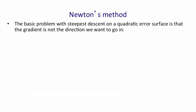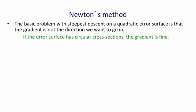So let's start with Newton's method. Newton's method addresses the basic problem with steepest descent, which is that the gradient isn't the direction you really want to go in. If the error surface has circular cross-sections and it's quadratic, the gradient is a good direction to go in. It'll point straight at the minimum.